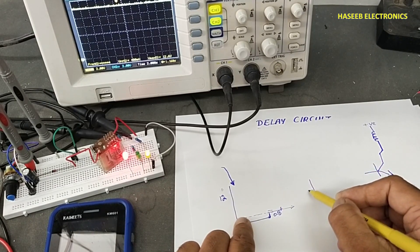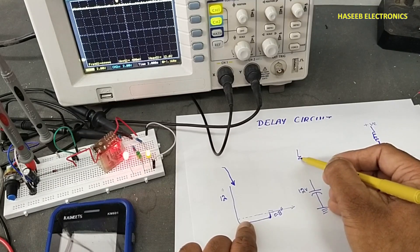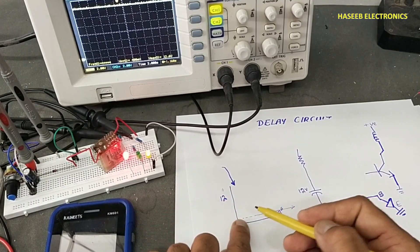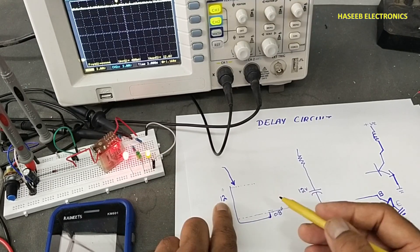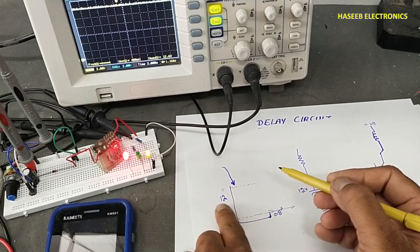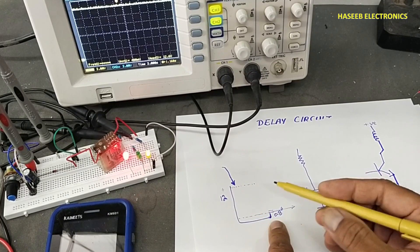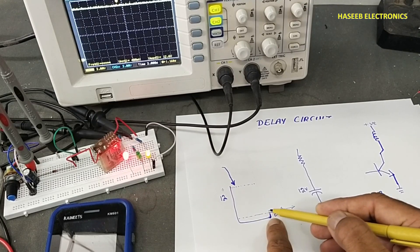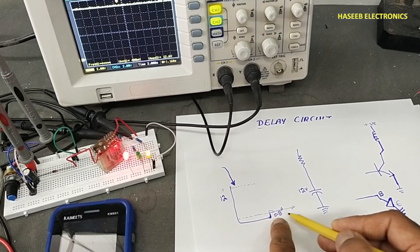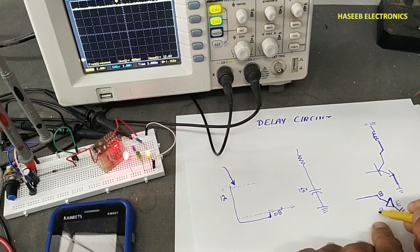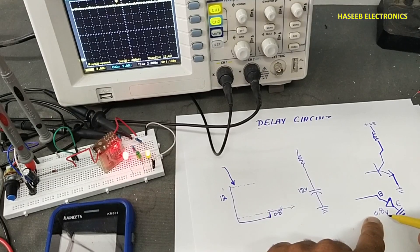Same way, if we have a capacitor here, it can charge up to 12 volts because we are connecting a resistor providing controlled current. This capacitor can charge up to 12 volts — like a tank that can fill to 12 inches. But when we connect a valve at 0.8 inches, we are draining water from that level. Same way, when the capacitor voltage reaches 0.8 volts, the transistor will turn on.